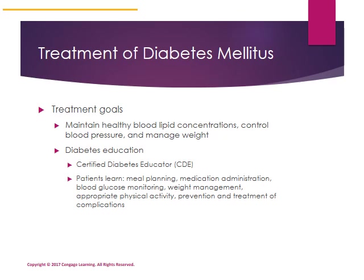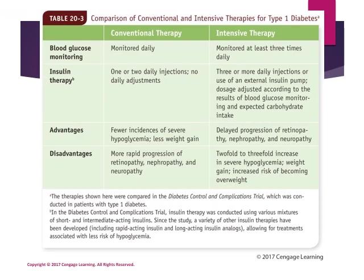Diabetes education is beneficial to teach people how to plan meals, administer medication, monitor blood glucose, and manage weight. There are two types of therapies for type 1 diabetes: conventional therapy and intensive therapy. These differ in the extent to which blood glucose is monitored and the amount of insulin given. Conventional therapy results in fewer incidents of severe hypoglycemia and less weight gain than intensive therapy — recall that insulin signals the body to store carbohydrate and fat.